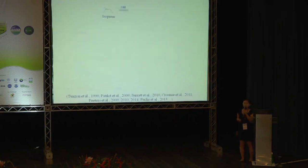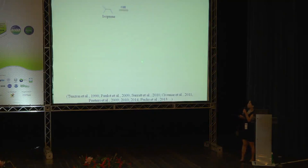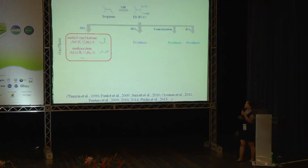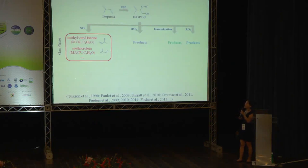To start to discuss this question, let's have a brief review about what we know about isoprene chemistry. Isoprene is primarily oxidized by OH radical and forms peroxy radicals. Peroxy radicals can react with either NO, HO2, or other RO2 radical isomers, and form a very different set of oxidation products. For example, for the reaction with NO, the major first-generation products are methyl vinyl ketone and methacrolein, MVK and MACR — these are isomeric C4 carbonyls.